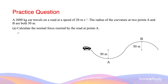As discussed, the direction of the normal force depends on the orientation of the surface that provides it. Now let's look at a vertically-oriented normal force. A 2000 kg car travels on a road at a speed of 20 metres per second. The radius of curvature at two points A and B are both 50 metres. Calculate the normal force exerted by the road at point A.